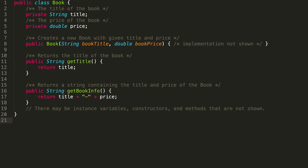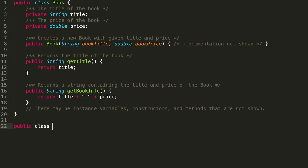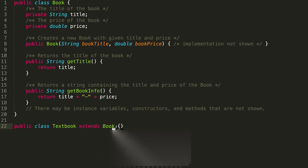In this problem, we're asked to write class Textbook, which is a subclass of Book. We've got these different methods we need to write, and maybe we need to add an instance variable somewhere. When it says that the class Textbook is a subclass of Book, we know that means we're going to start off our class with: public class Textbook extends Book, and then all the code we want to write will be within these curly braces.